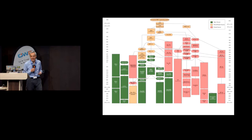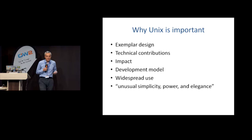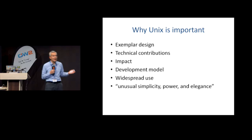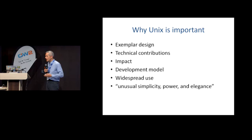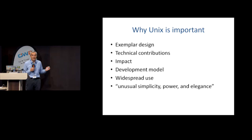The history of what followed was quite long and complex, as you can see from this tree. Unix is important for several key reasons: its exemplar design, its technical contributions, its impact, its development model, its widespread use — probably most of the devices here are running some sort of Unix or a system based on its ideas — and, in the words of Doug McIlroy, its unusual simplicity, power, and elegance. I found these things evident even at the first PDP-7 incarnation of that unnamed system.